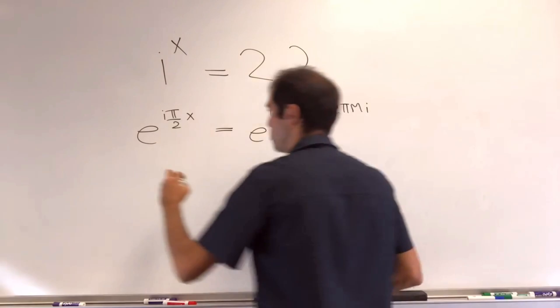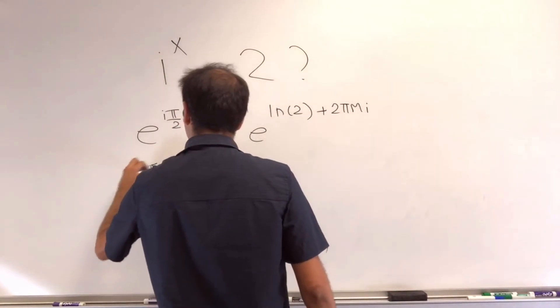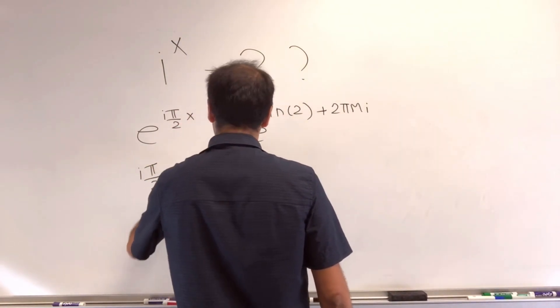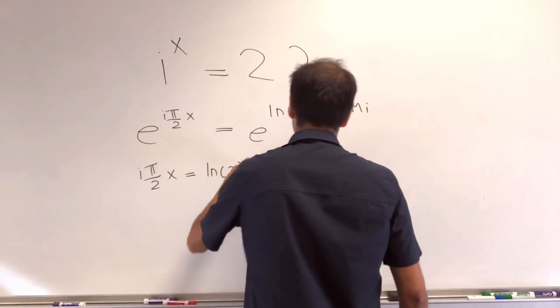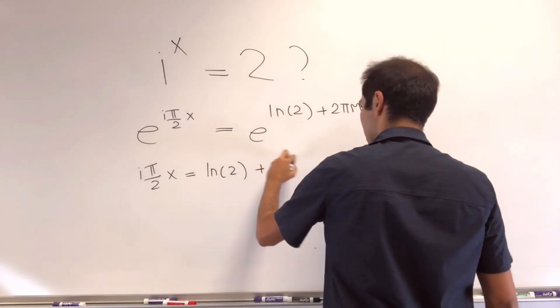And then just comparing exponents, you get i pi over 2x equals ln of 2 plus 2 pi mi.